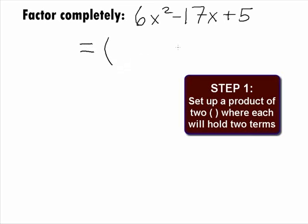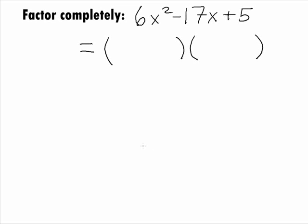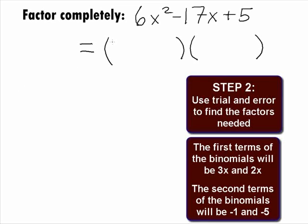First, let's set up our two parentheses for our binomials. In this problem, the first terms end up being 3x and 2x.